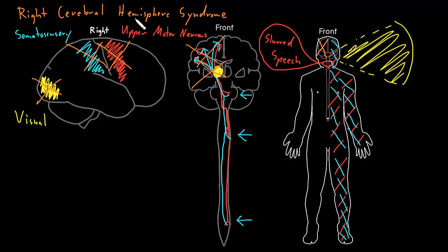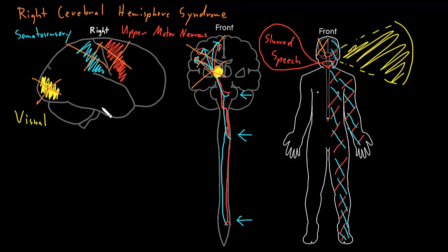The other senses are usually okay — just like with the left cerebral hemisphere, with a right cerebral hemisphere syndrome we usually don't see problems with other senses because they tend to go to both cerebral hemispheres. If only one hemisphere is dysfunctional, the other can usually handle those senses. And since most people have their language areas in the left cerebral hemisphere, we tend not to see abnormal language with right cerebral hemisphere dysfunction.